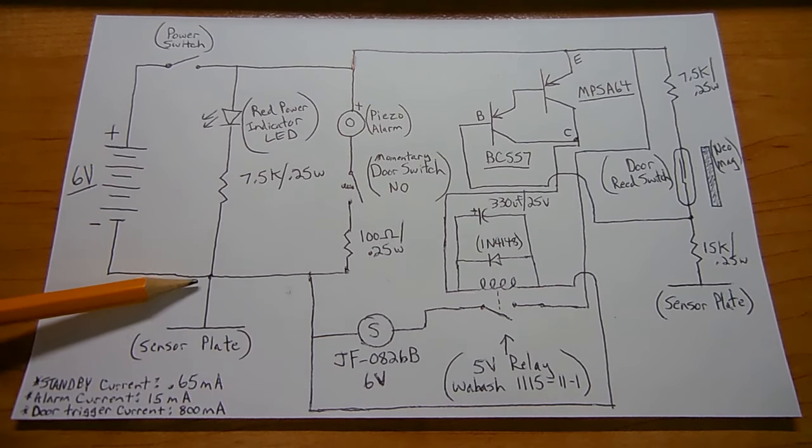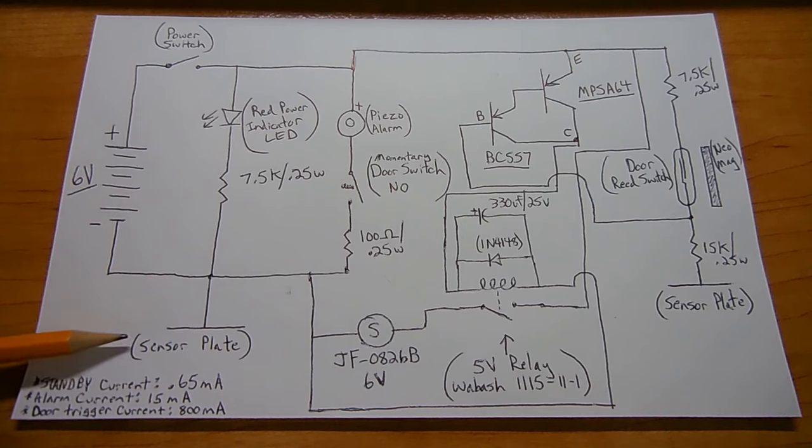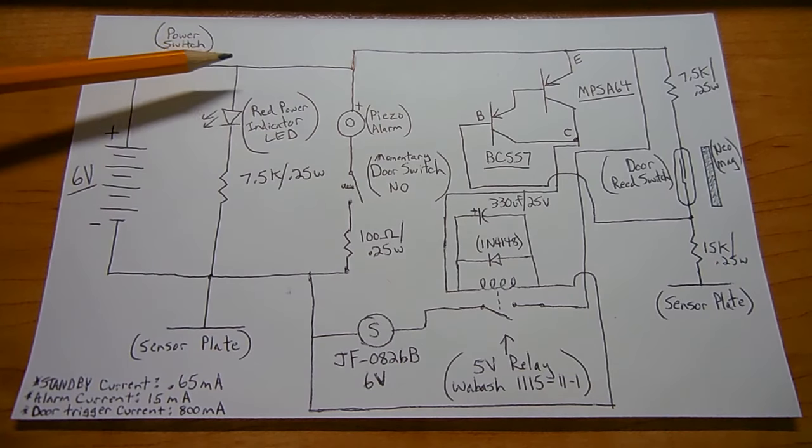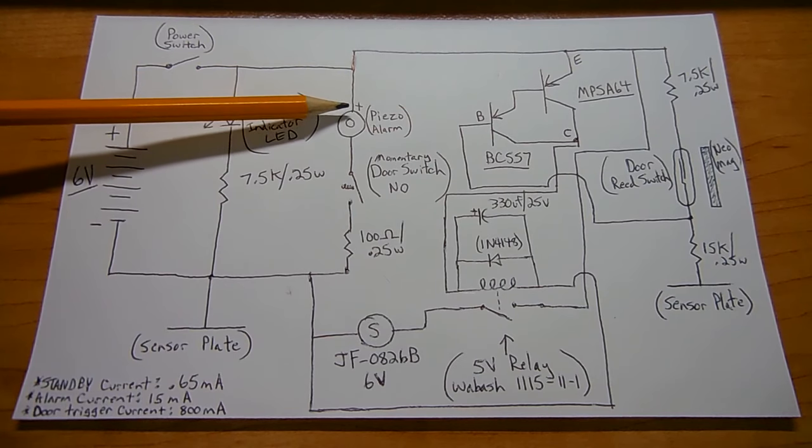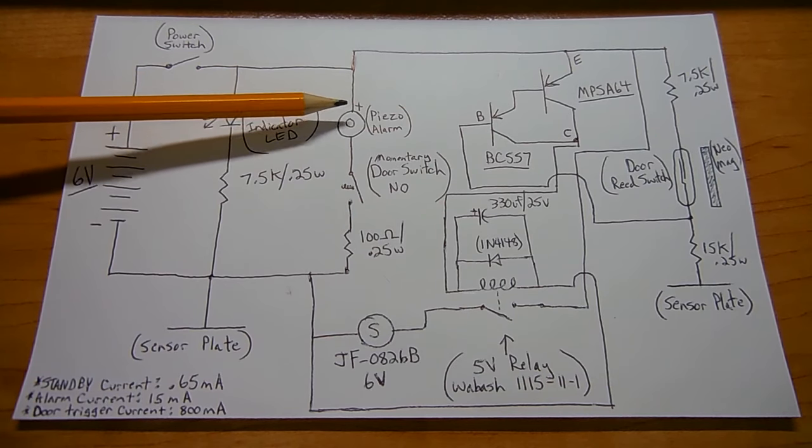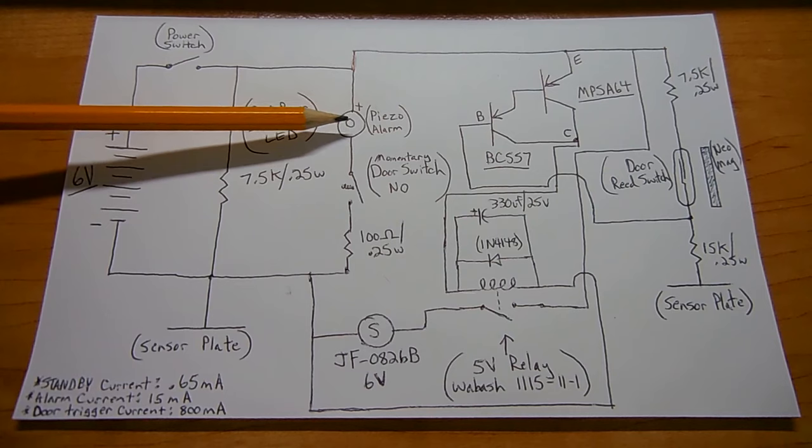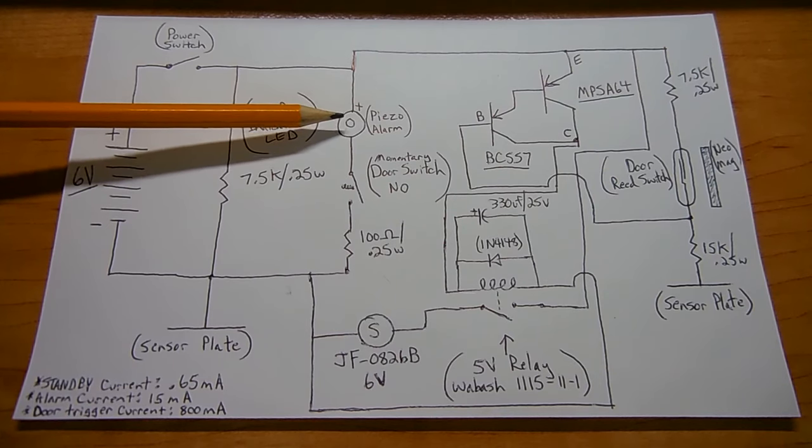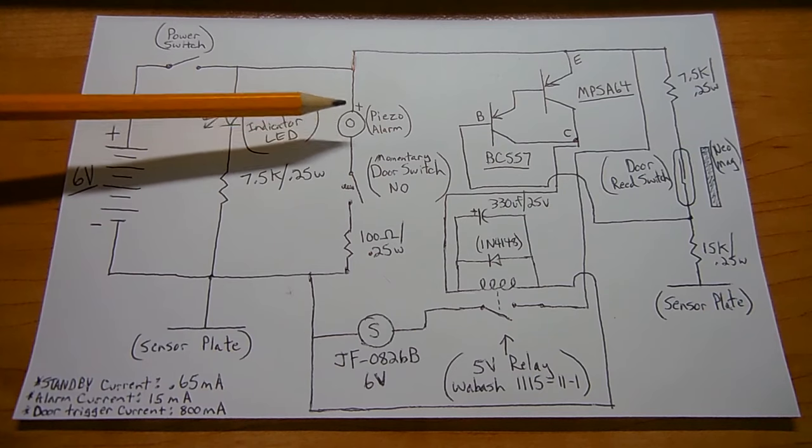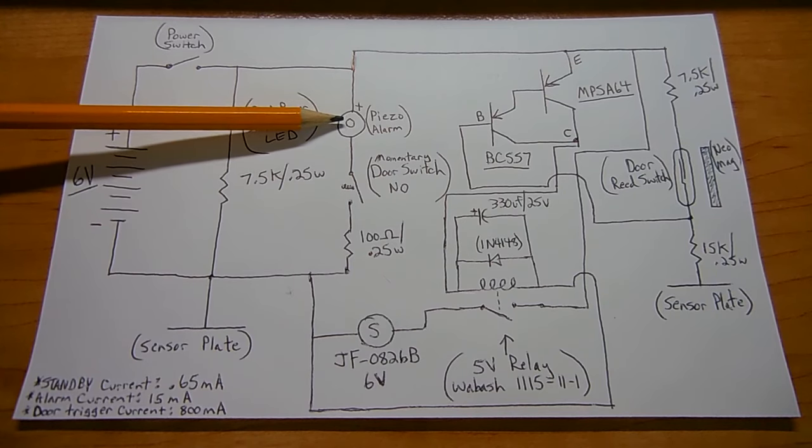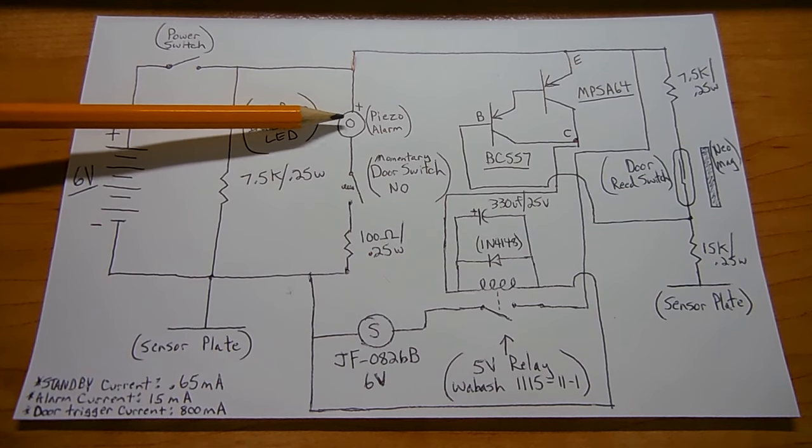The negative rail here connects to one of the sensor plates. The positive rail carries over to the piezo alarm or buzzer. Connect it to the positive side. Keep in mind, this has a built-in oscillator. If you do not have an oscillator built into it, when you apply power, it's going to do absolutely nothing. This one here, I think, was a 5 volt alarm. You can use ones that are designed up to 12. They'll also work.